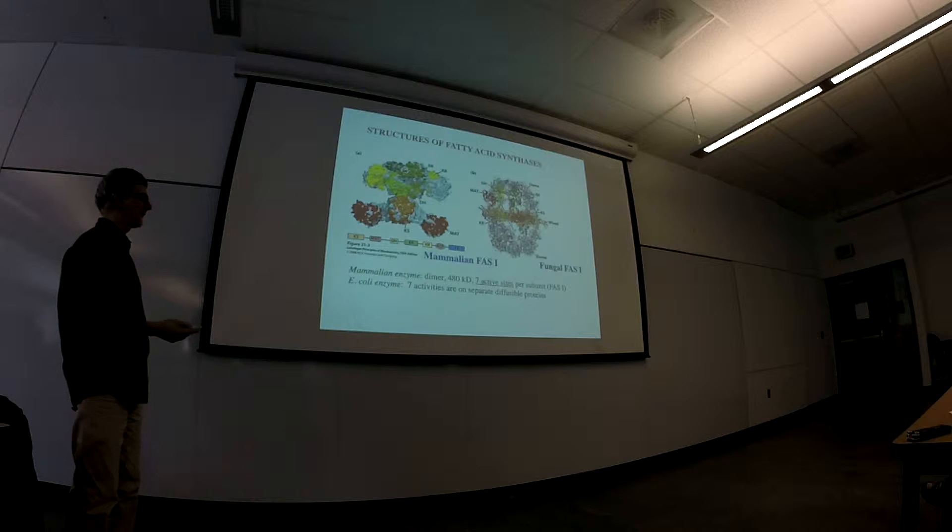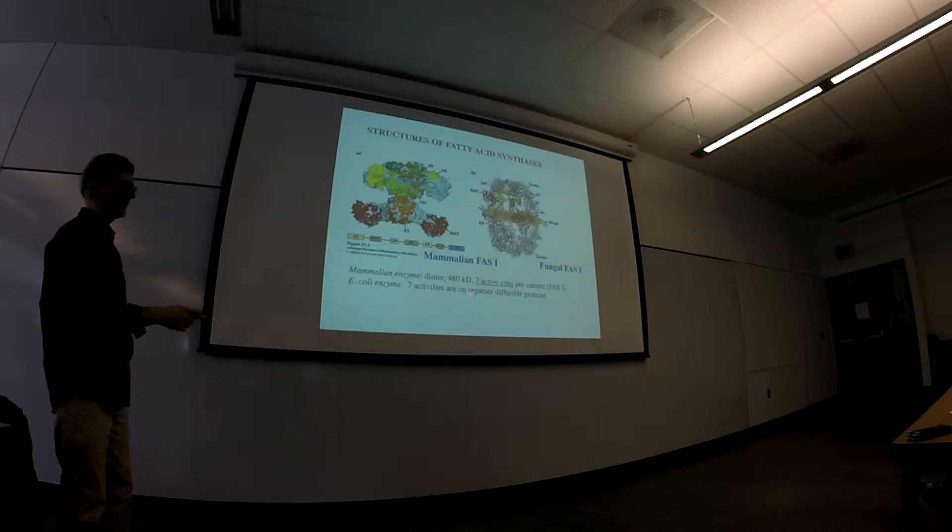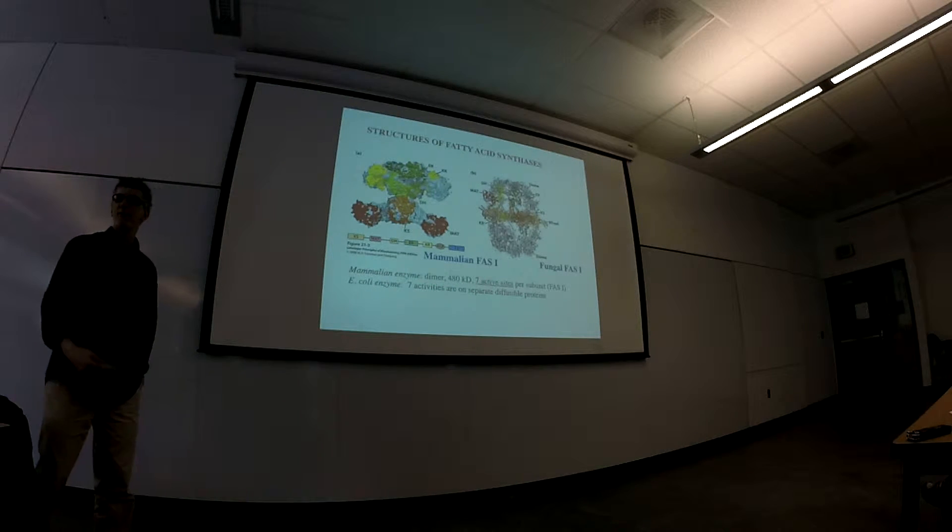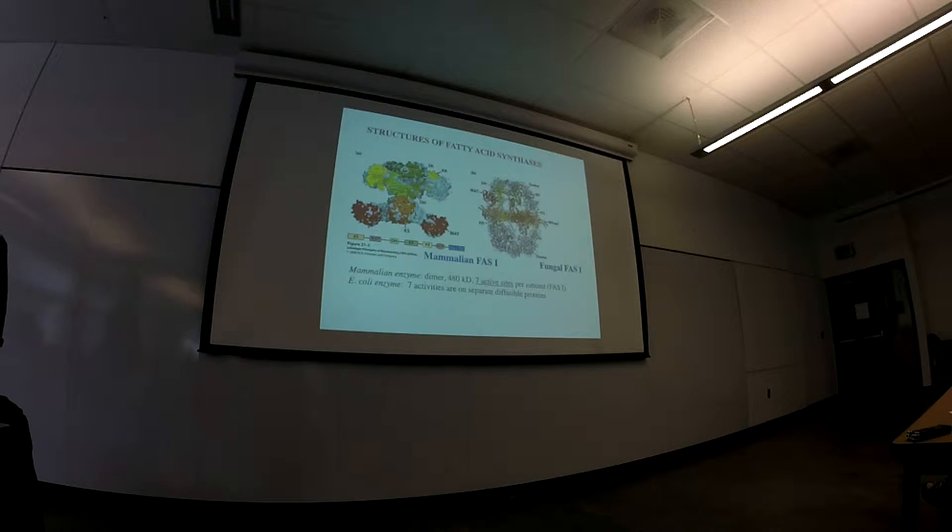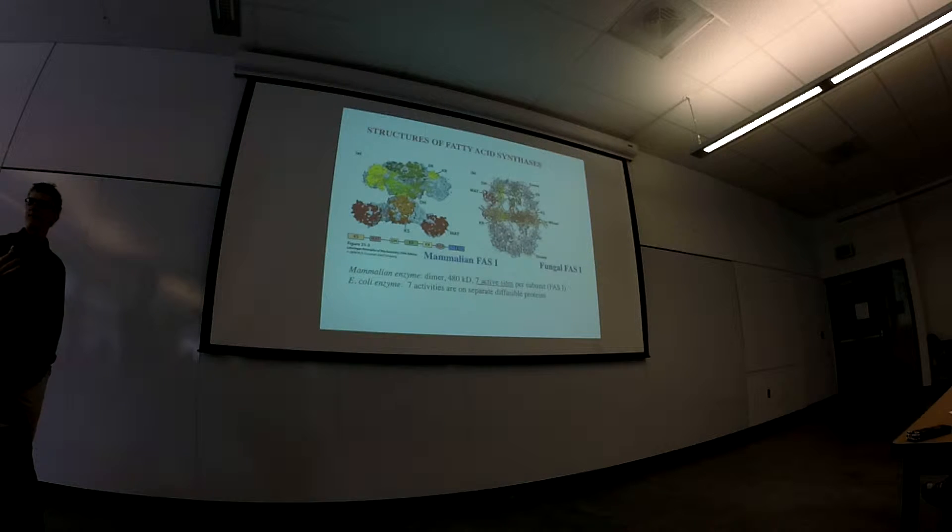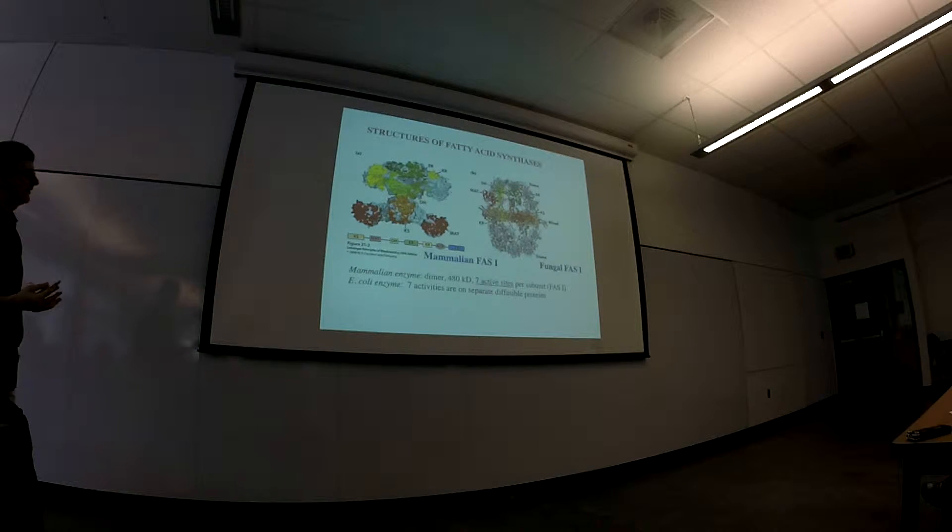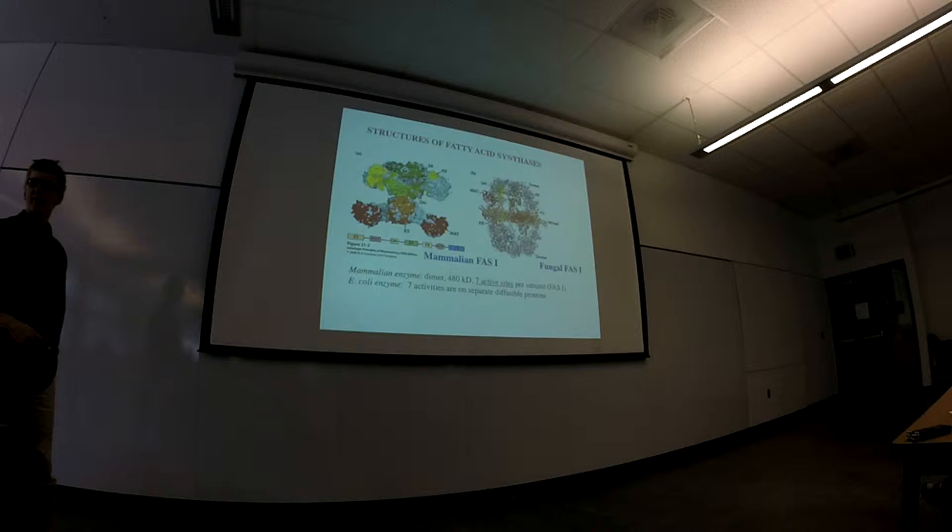Now in E. coli, it turns out that the seven activities are actually on separate diffusible proteins. But in mammals, this thing is channeled. There's channeling on the surface of one enzyme. And so the whole thing goes on on one enzyme surface. Okay. So that's really the one we're going to be talking about is the mammalian one.